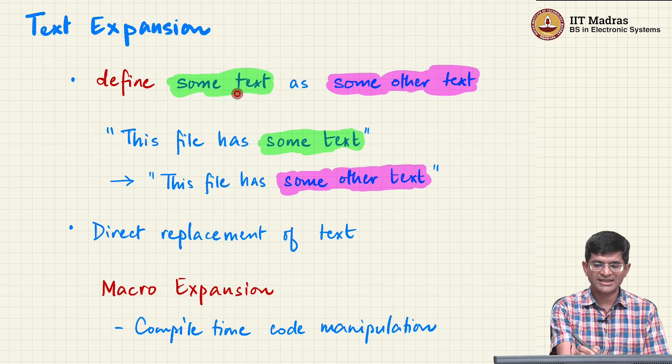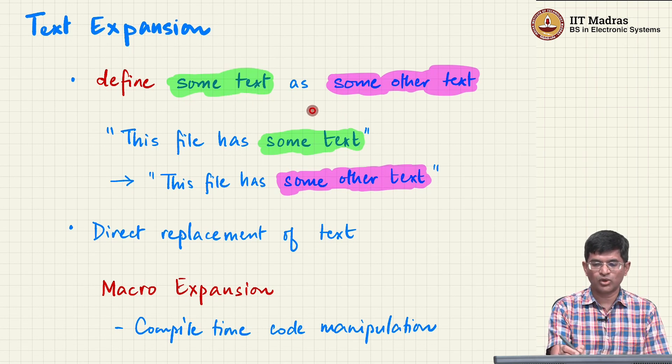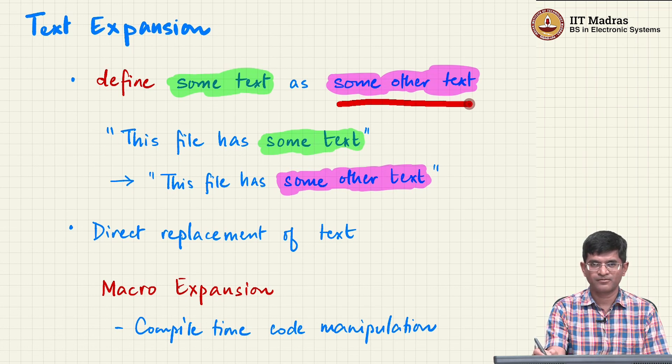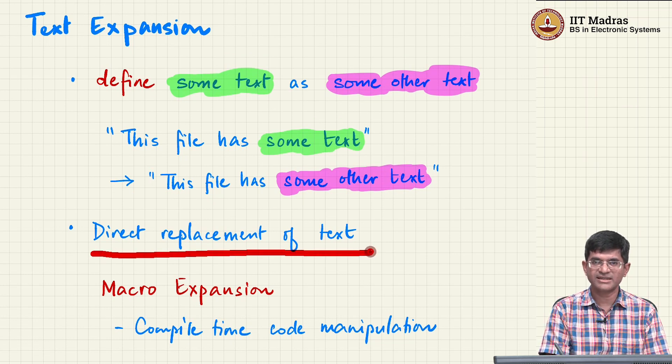What I do is I hash define some text as some other text. Literally what this means is that there is a preprocessing stage that then occurs, where we directly replace some text with some other text.